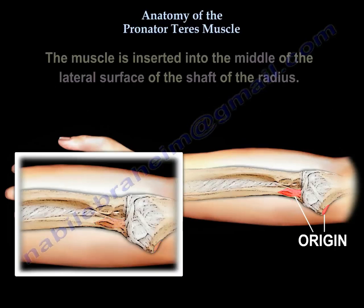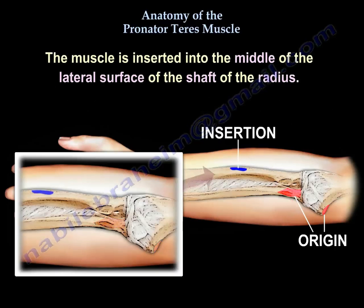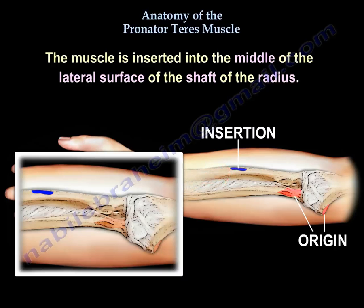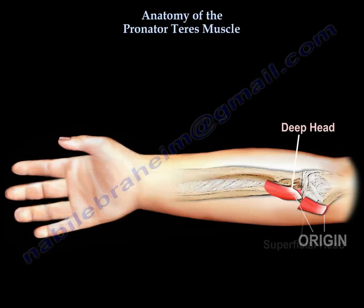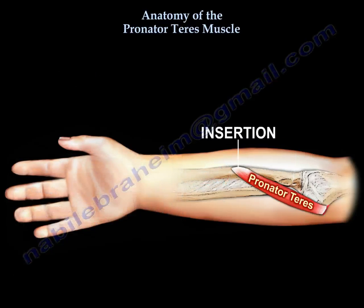The muscle is inserted into the middle of the lateral surface of the shaft of the radius, as you can see here. Here is the origin and here is the insertion.